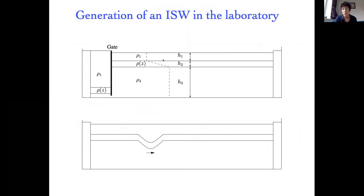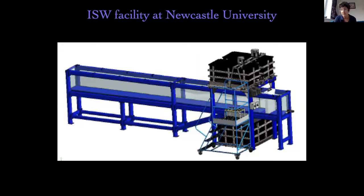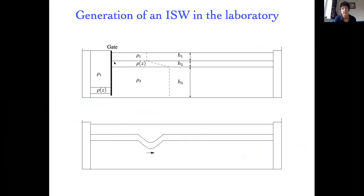Once the tank is stratified, we put a gate in the upstream end of the tank, and behind this gate we fill with fluid of density ρ₁ — the same density as the top layer in the main section. Now across this gate there's a density gradient: light fluid on the left-hand side, heavy fluid on the right. When we pull the gate out, the fresh fluid wants to rise, the heavier stuff falls, we cause a disturbance to the pycnocline, and this propagates into the main section of the tank as an internal solitary wave of depression. By carefully controlling the shape and size of what we put behind this gate, we can control what we get out.